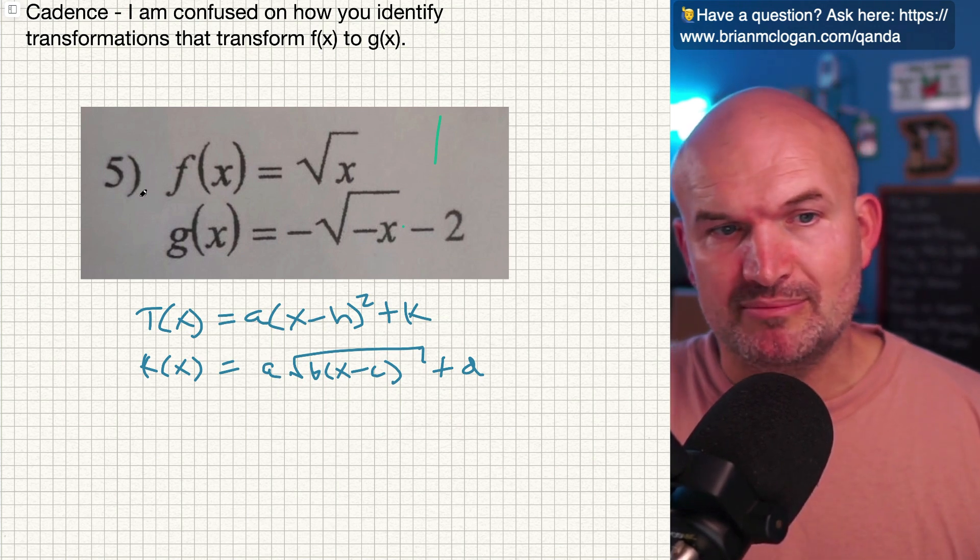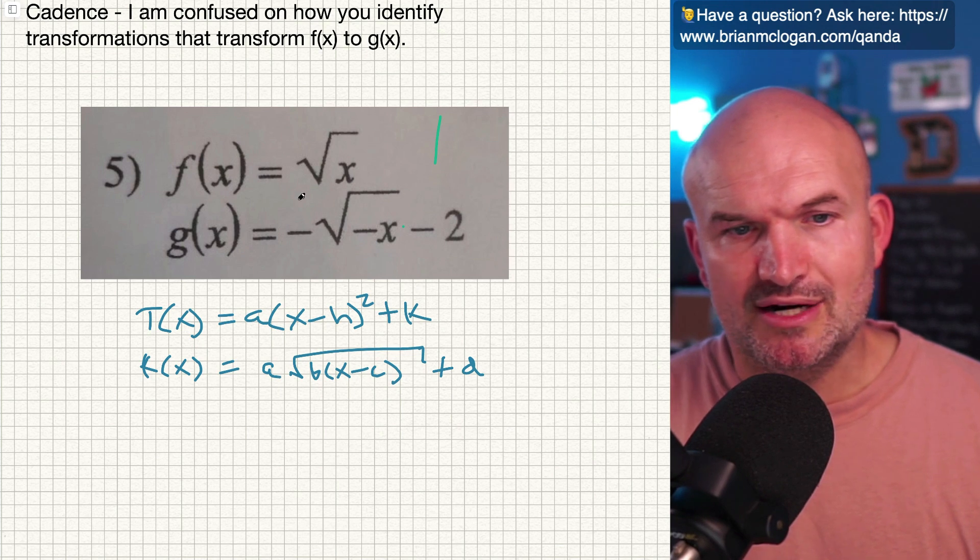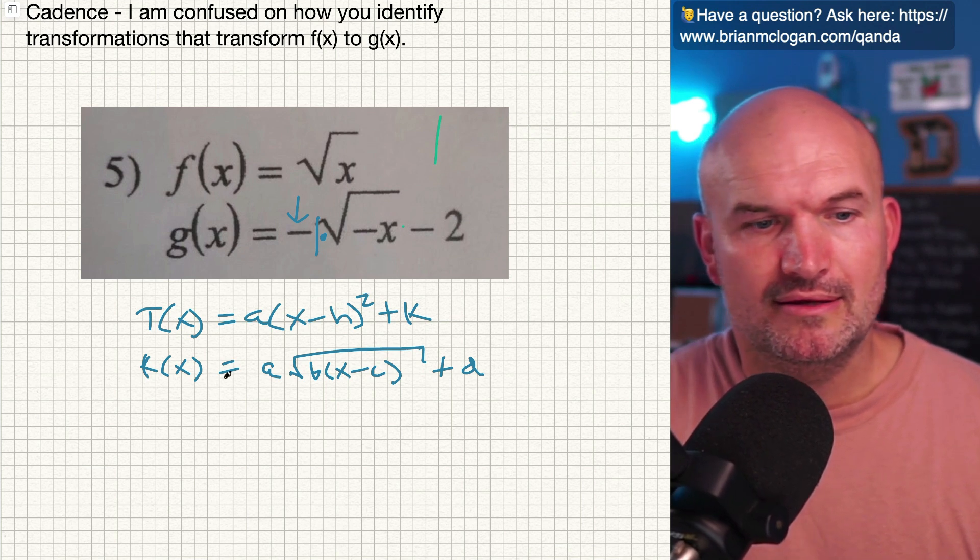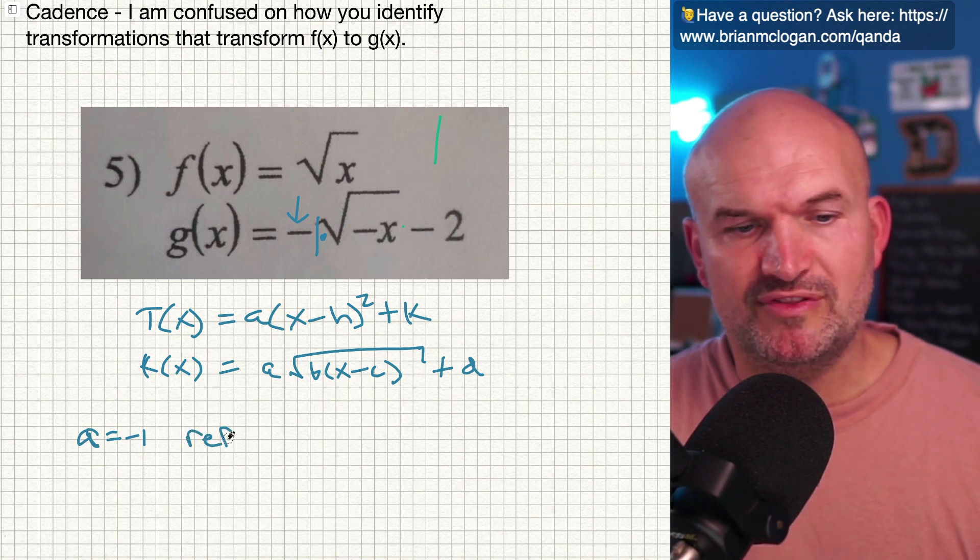So when I look at this first problem here, if you're saying from going to f of x to g of x, notice here, I'm adding in this negative, right? That's like a negative one on the outside. That's going to be my a. So I can say my a in this case is equal to a negative one. Well, what does that tell me? That tells me to reflect the x-axis.